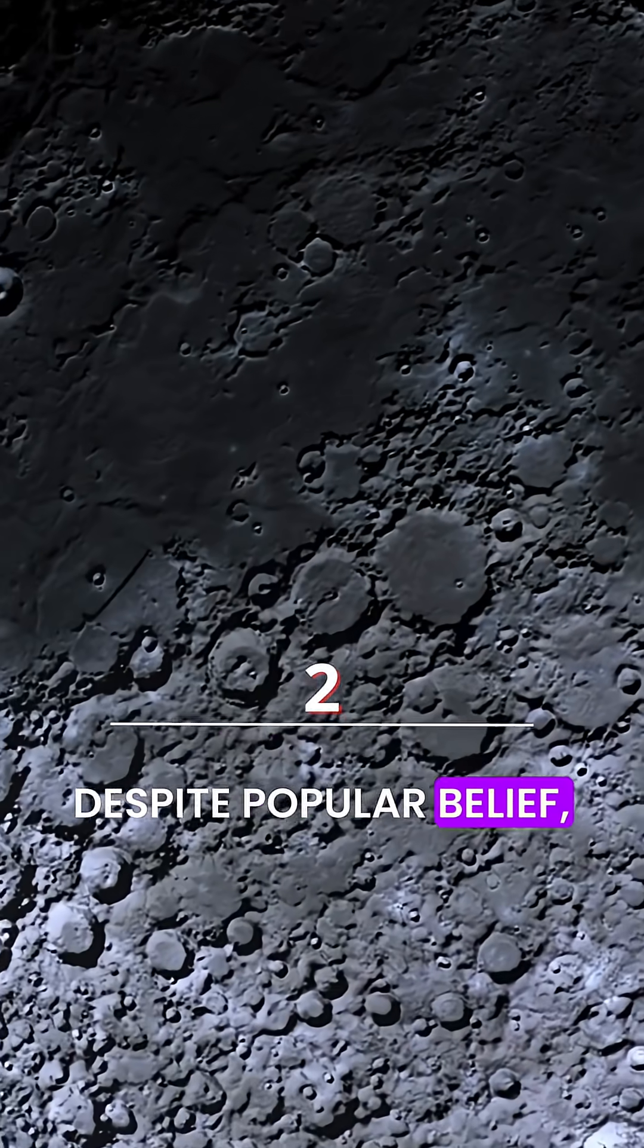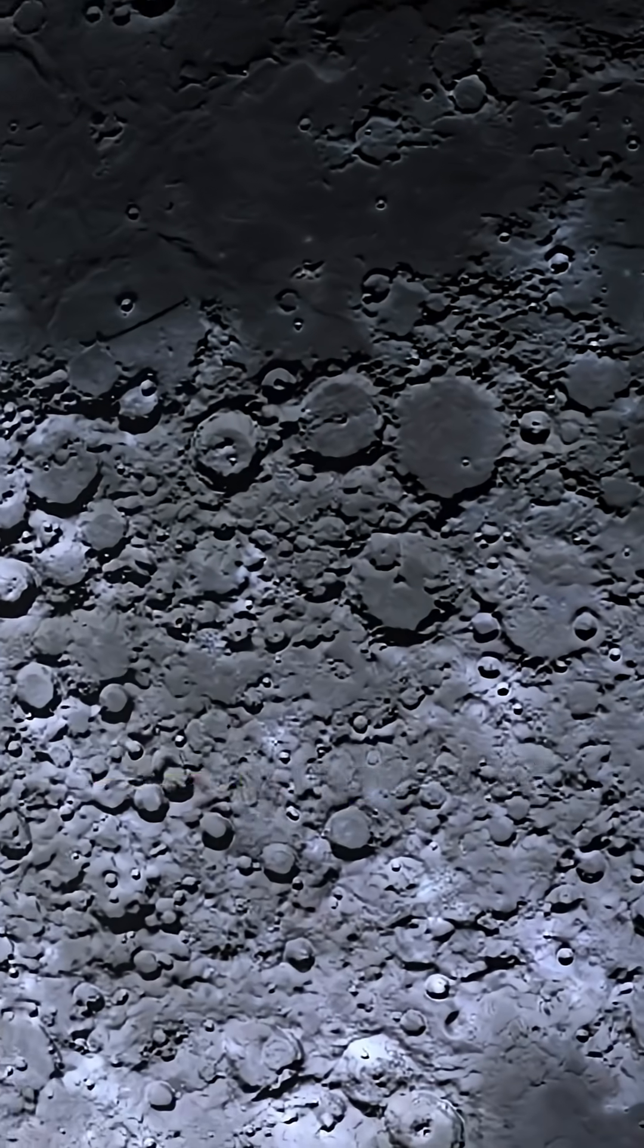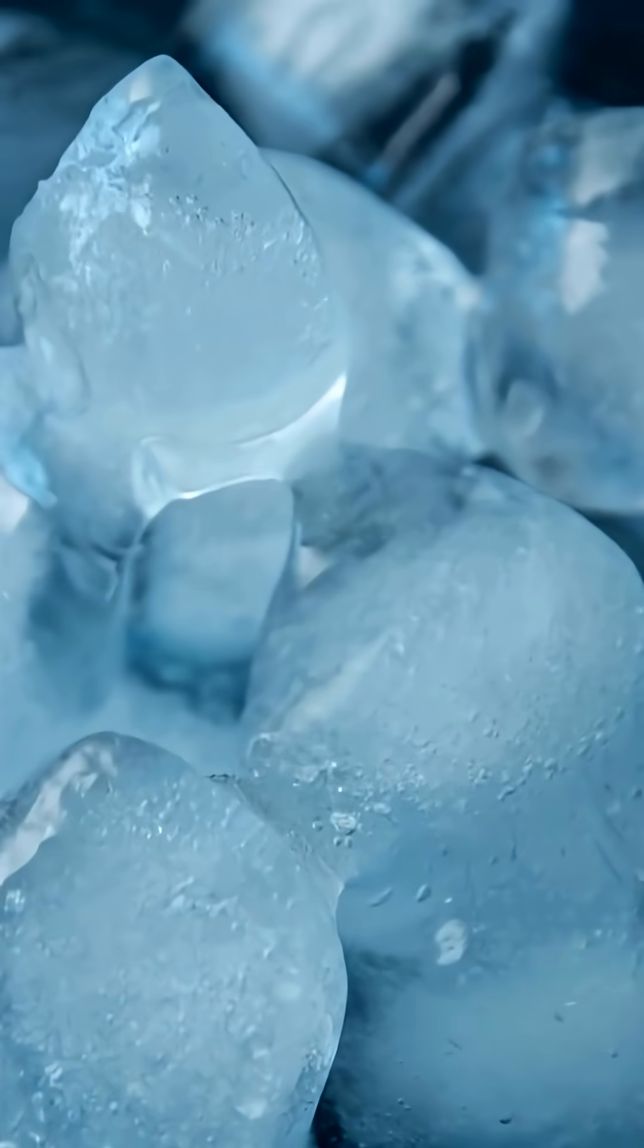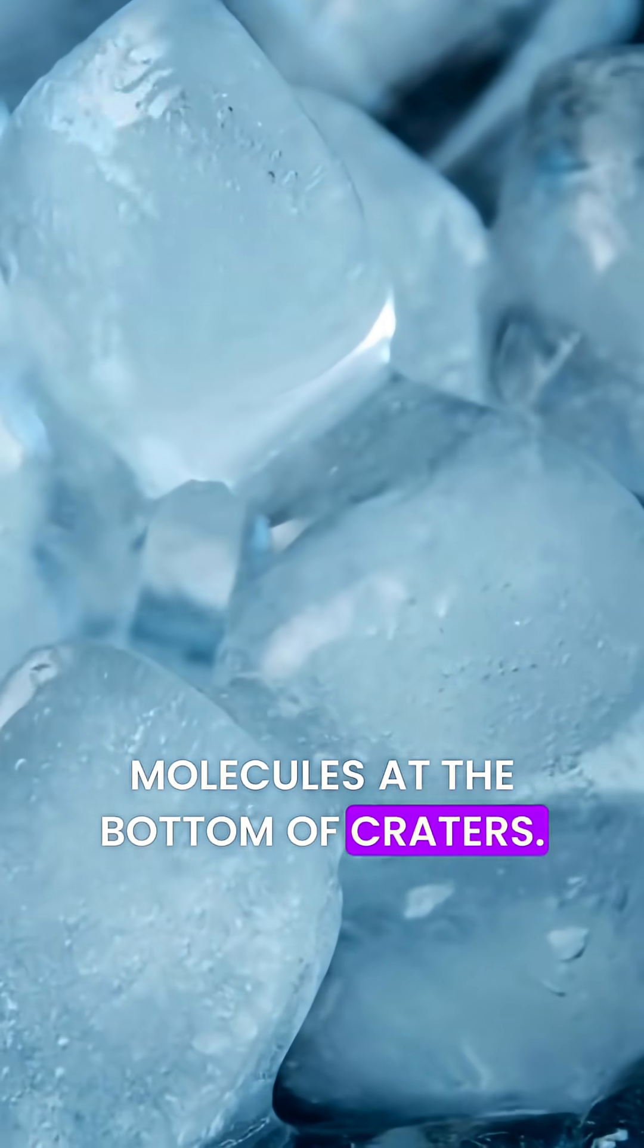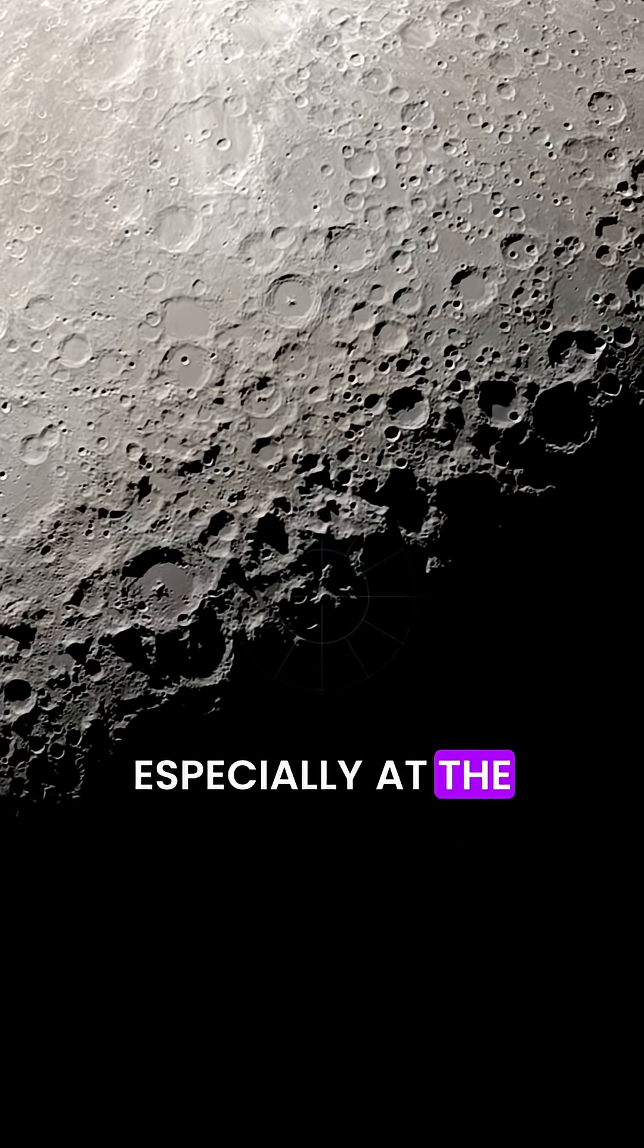Despite popular belief, the Moon has a great deal of water in the form of ice or molecules at the bottom of craters, especially at the lunar poles.